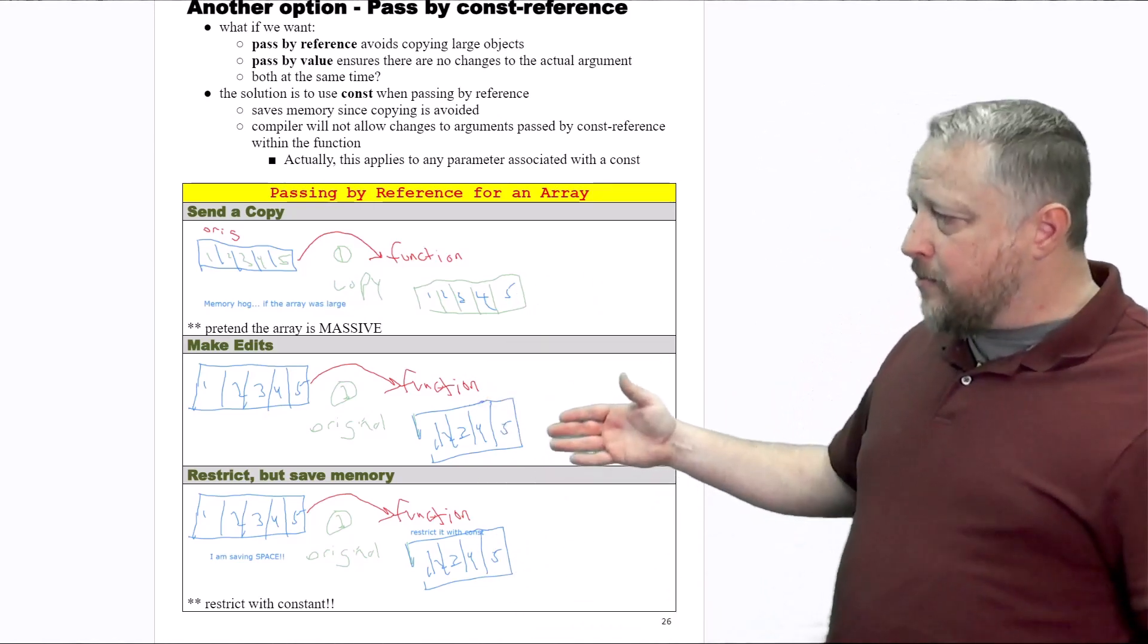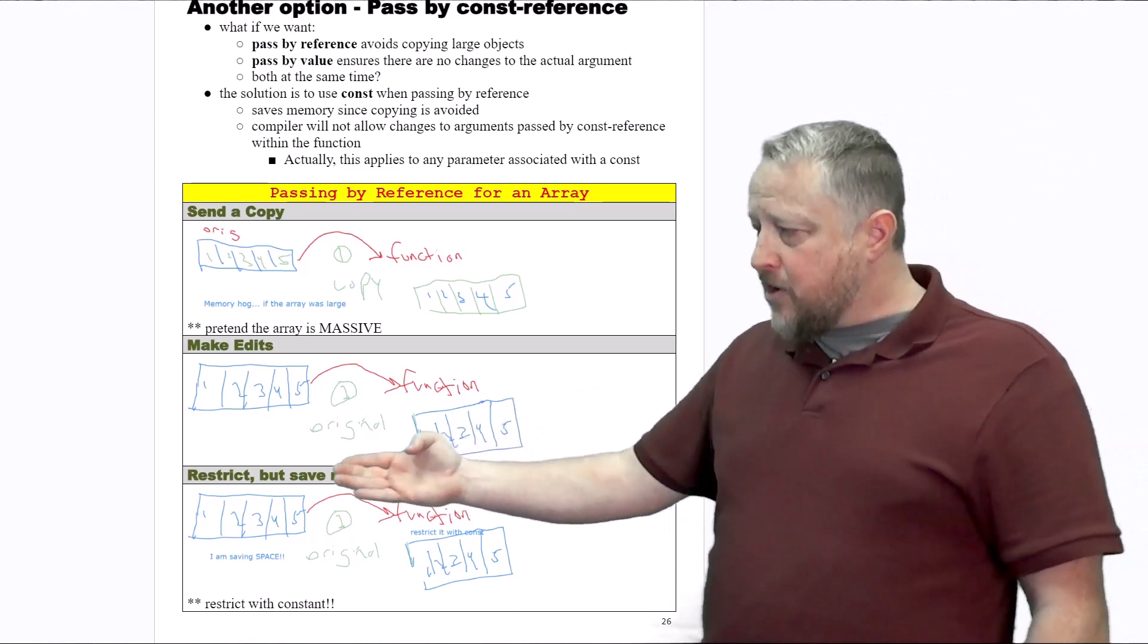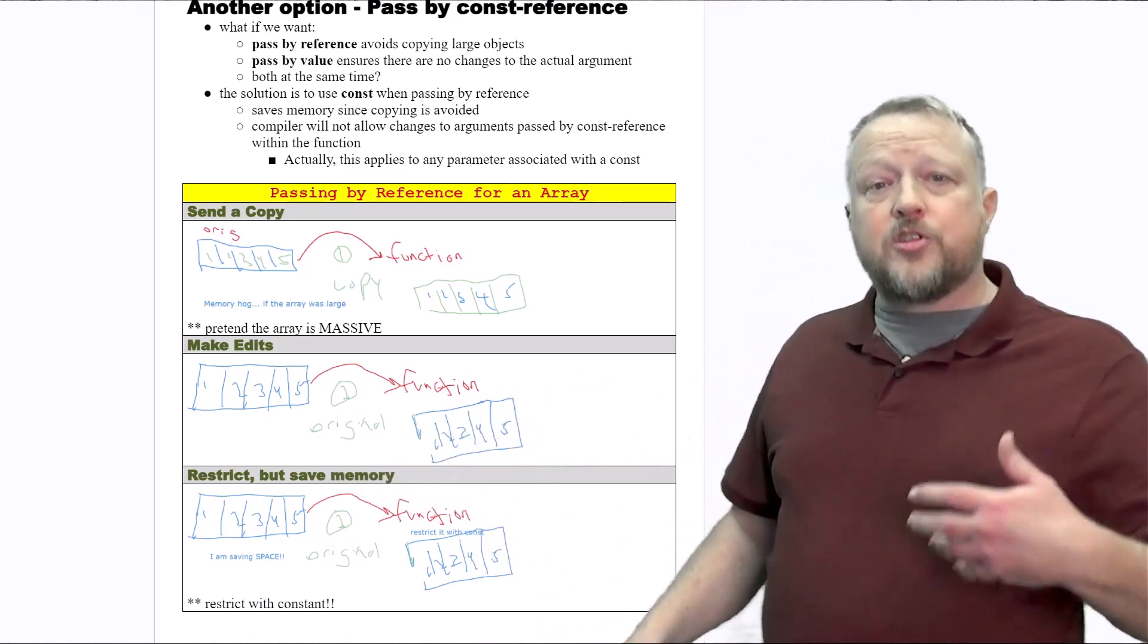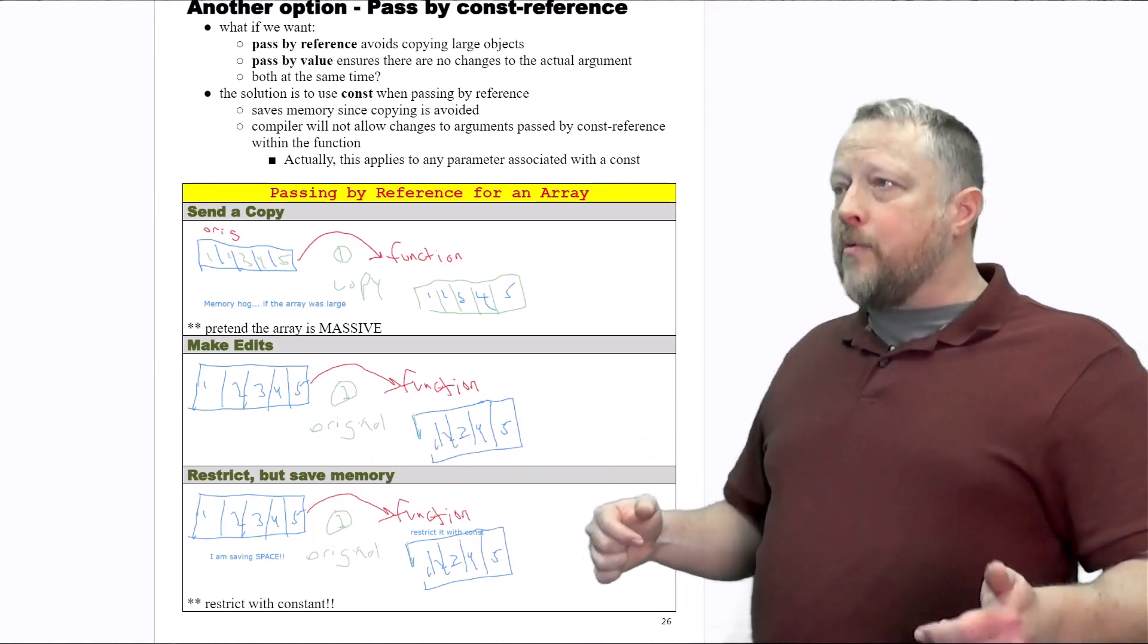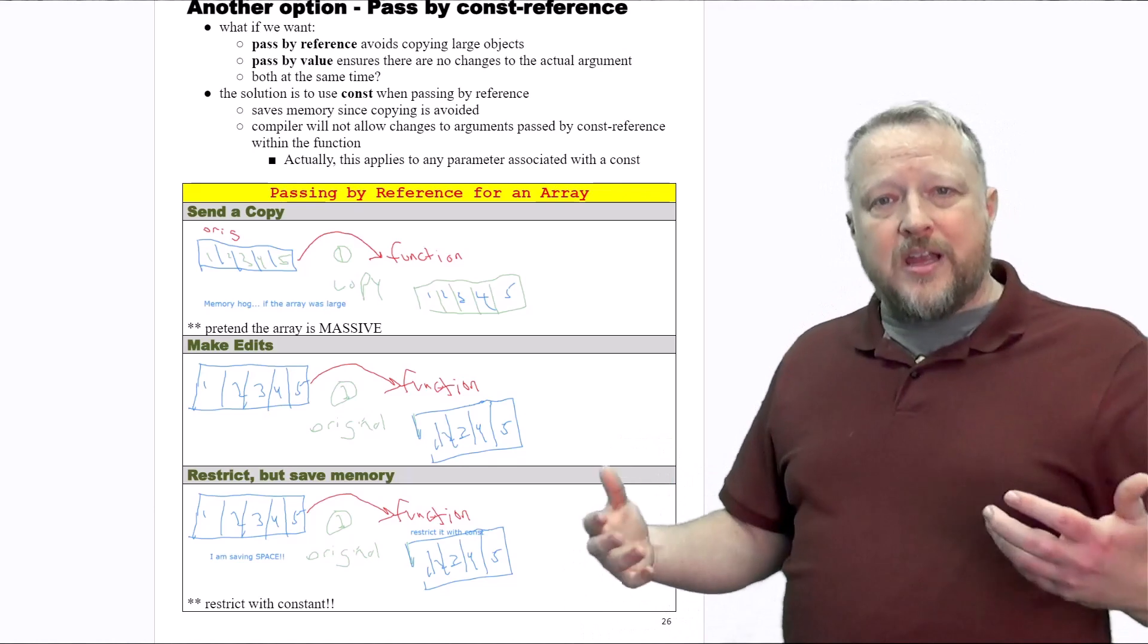The other item is, frankly, if you wanted to make edits, I want to send the original. So I would use the star for an array, or I would use an ampersand for some of the other data types.